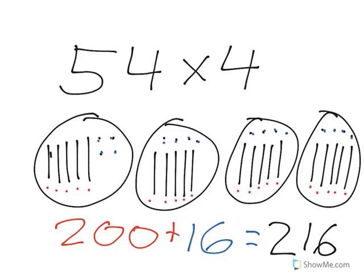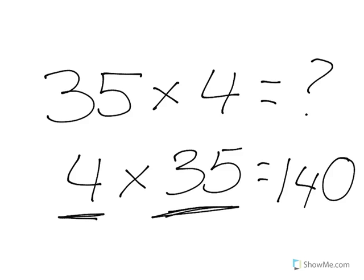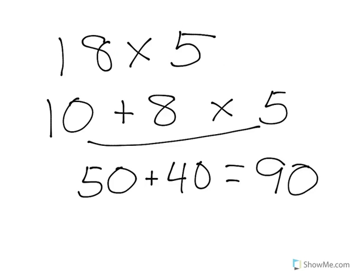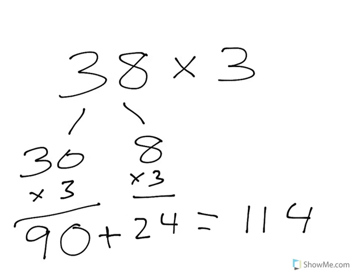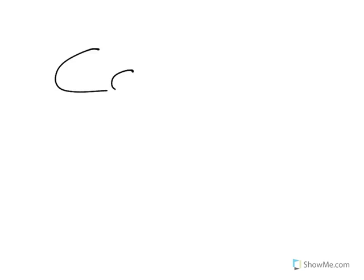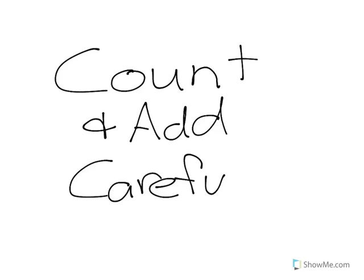So there you go — three ways to solve two-digit by one-digit multiplication. We can do it the standard way, we can do it using the expanded form, or you can always draw equal groups and count up using the simplified base 10. If you do that last method, please make sure you count and add carefully — you don't want to make any mistakes in those simple math steps.